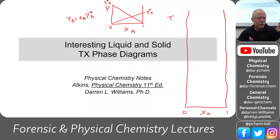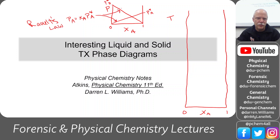That's Raoult's Law - these lines right here. And then the total vapor pressure is the sum of all of those: P-total equals P-A plus P-B. That's Dalton's Law.